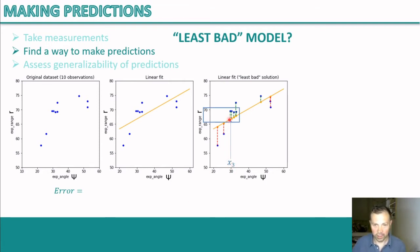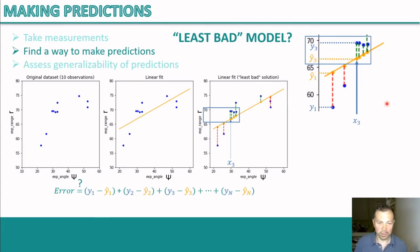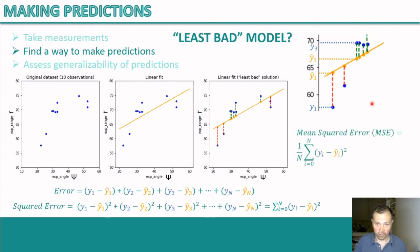If you just sum the errors for each data point, there's a problem because positive and negative errors partially cancel out. You could take the absolute value — that's the absolute error — or you could take the squared error, which has nicer properties. You sum all these squares, and to make the error independent of the number of data points, you take the mean. That's the mean squared error (MSE), a very common metric in machine learning. To have the least bad model, you need the least mean squared error.